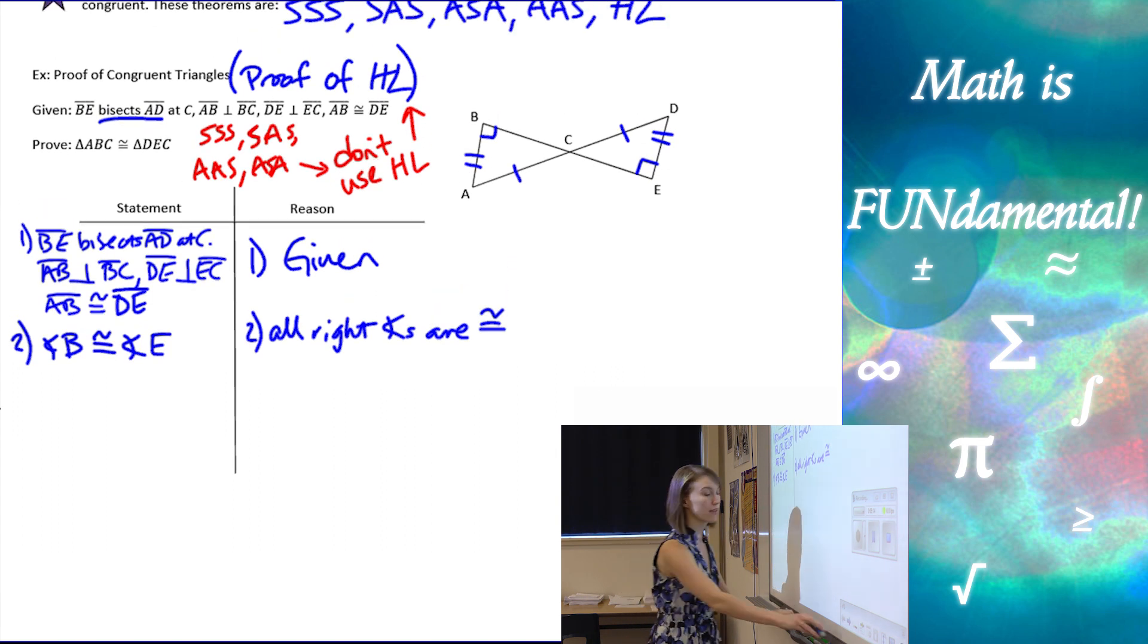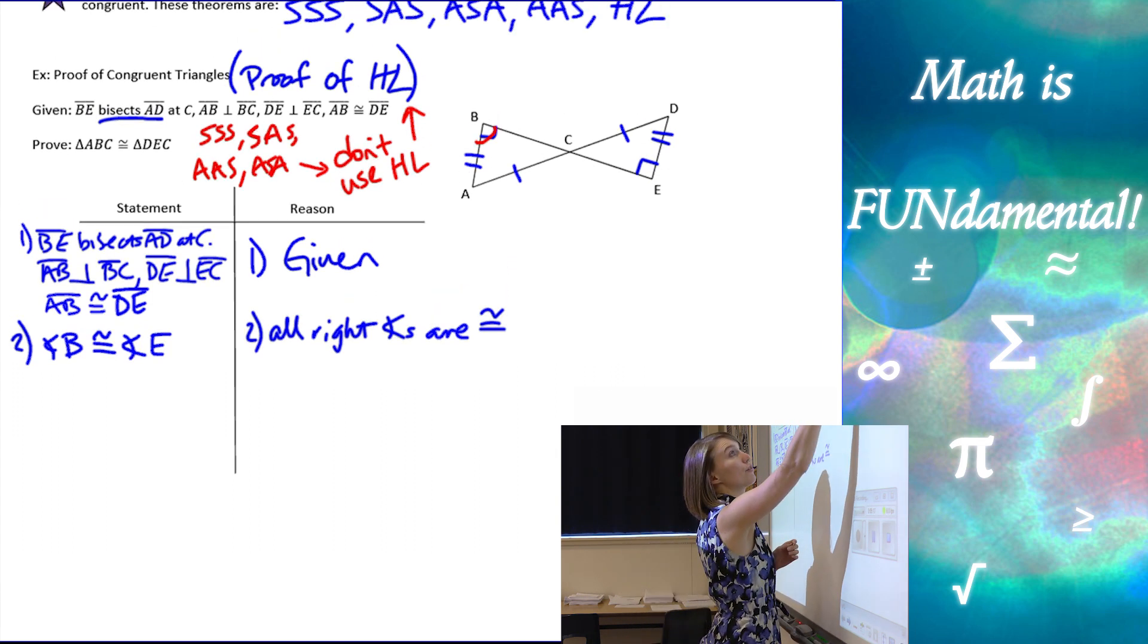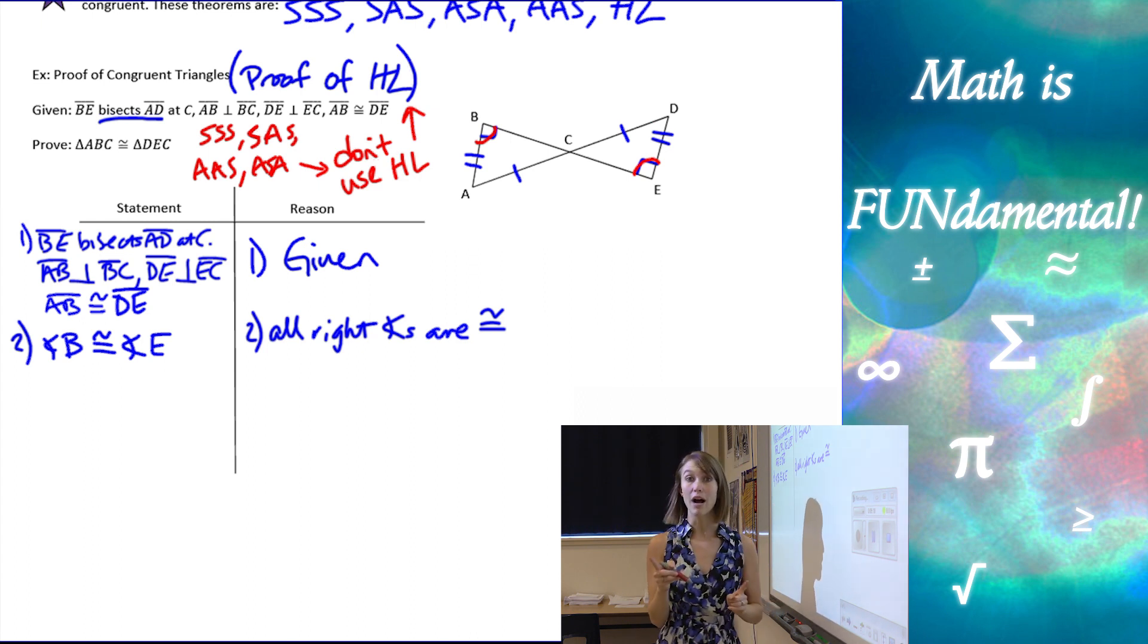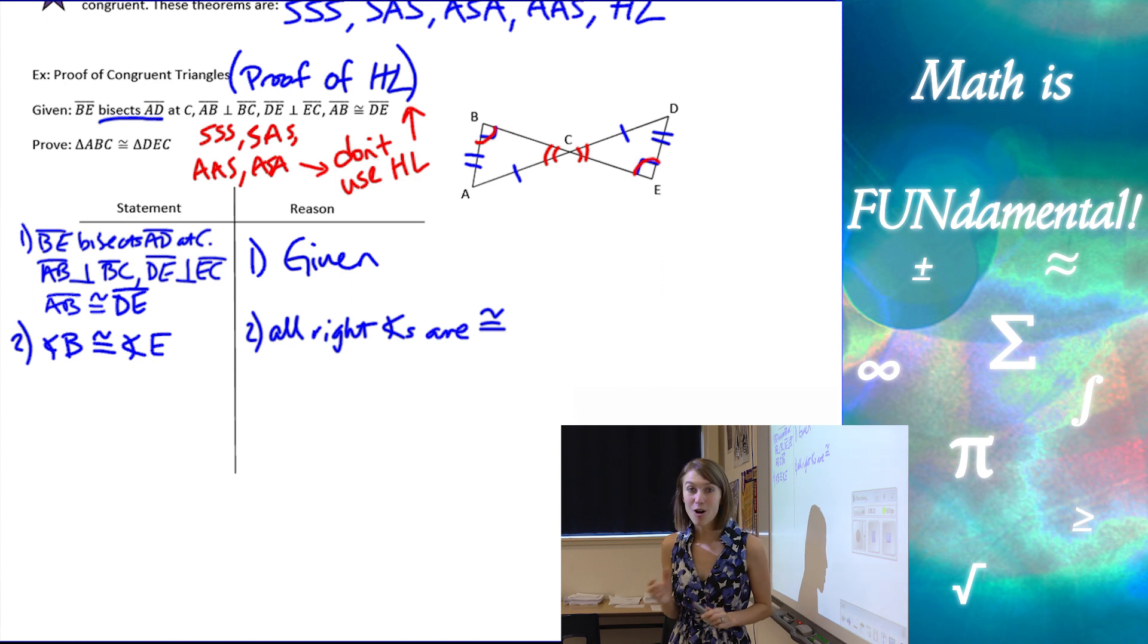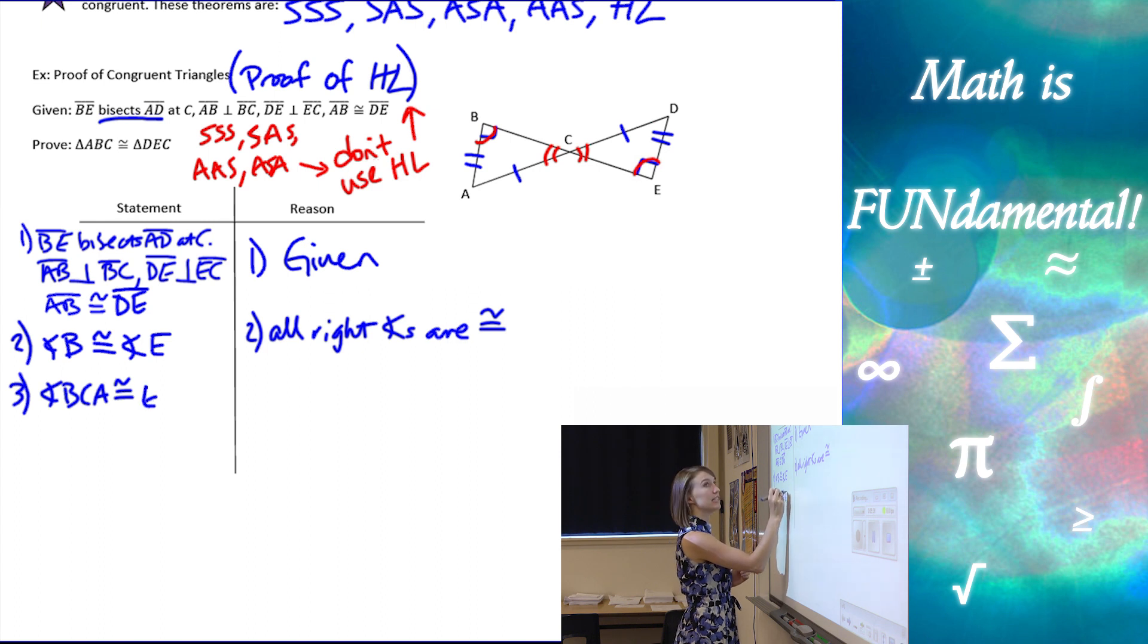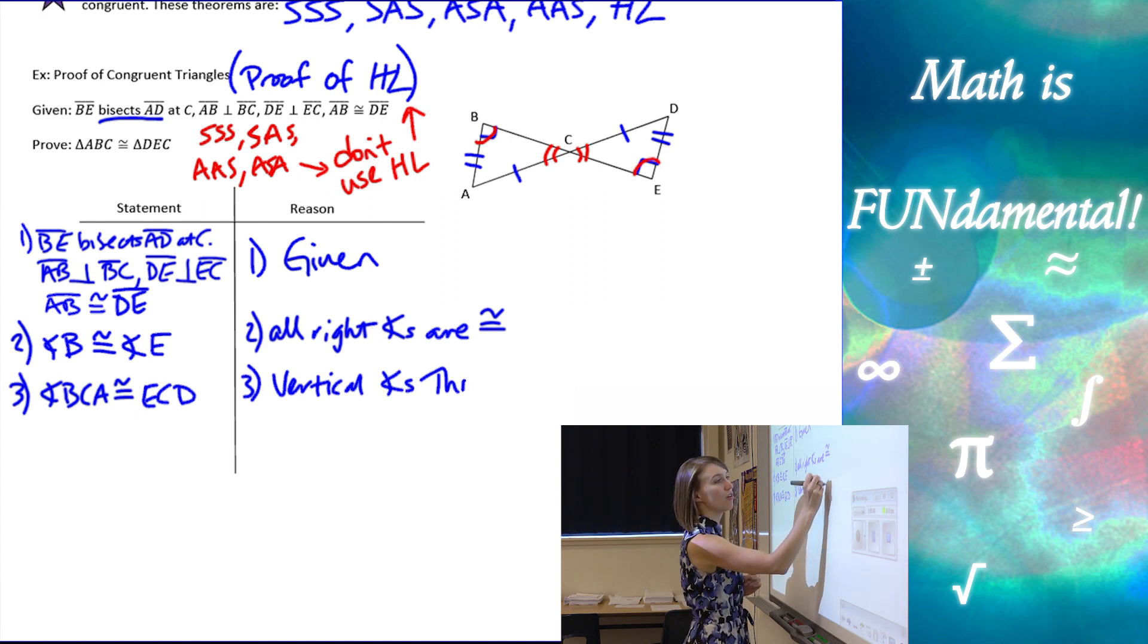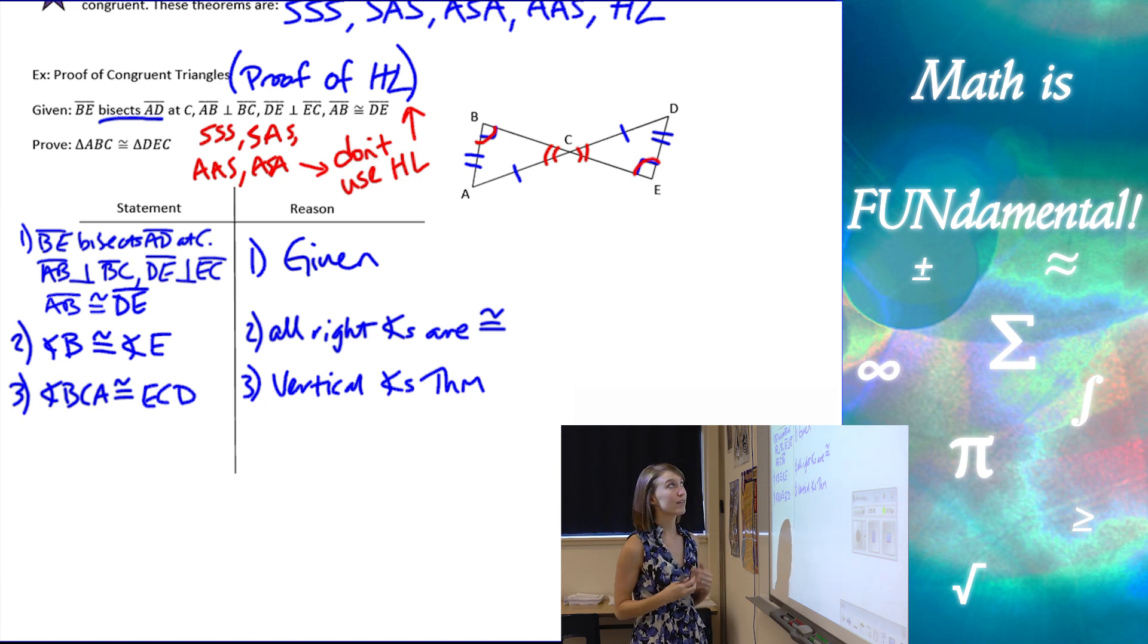Next, if I mark that on my diagram, I have this angle is now congruent to this angle. Oh, I also have vertical angles. Always look for vertical angles. So, number three, we have angle BCA is going to be congruent to angle ECD by the vertical angles theorem that says that all vertical angles are congruent.